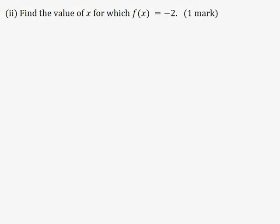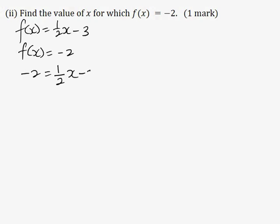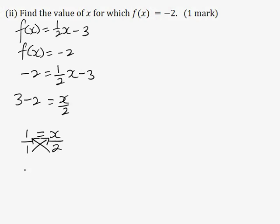Part 2: Find the value of x for which f(x) = -2 for one mark. I'll write f(x) = (1/2)x minus 3, and substitute f(x) = -2. So -2 = (1/2)x minus 3. Taking minus 3 to the left-hand side gives -2 + 3 = x/2, so 1 = x/2. Cross-multiplying gives x = 2.